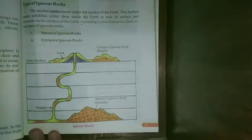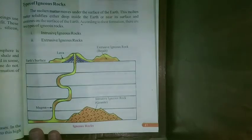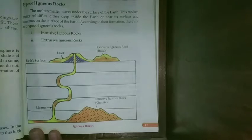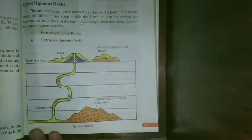Going into the interior of the earth, the temperature increases. In the center, the temperature is estimated to be 5,000 degrees centigrade — which is equivalent to the sun's temperature, about 5,000 to 6,000 degrees centigrade. Due to this high range of temperatures, the minerals melt and a thick igneous matter, magma, is formed.